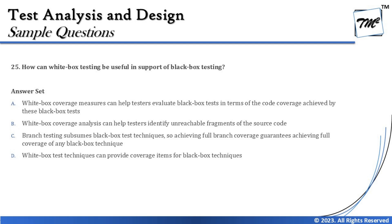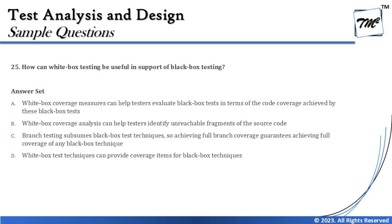So we say a blend of white box and black box is required to achieve the best coverage possible, because white box cannot test what is not implemented, and black box cannot hit every single line of code. Option A makes sense: white box coverage measures can help testers evaluate black box tests, providing objective measurement of coverage. If black box test cases miss a part of the code, white box coverage can guide us to create additional test cases.